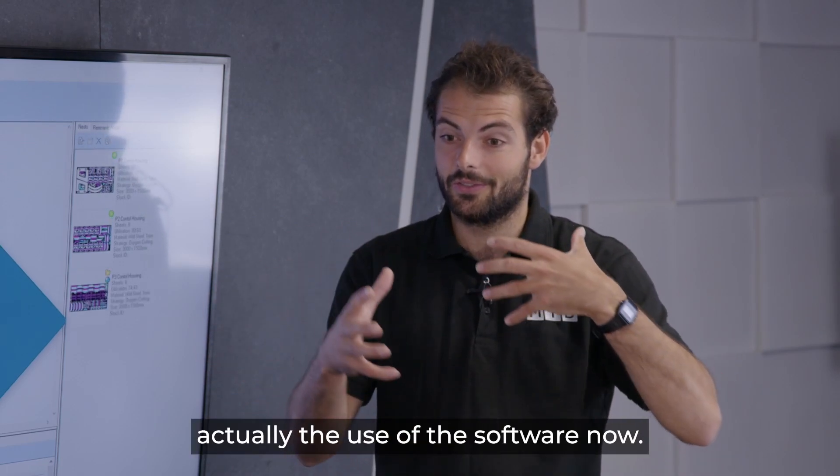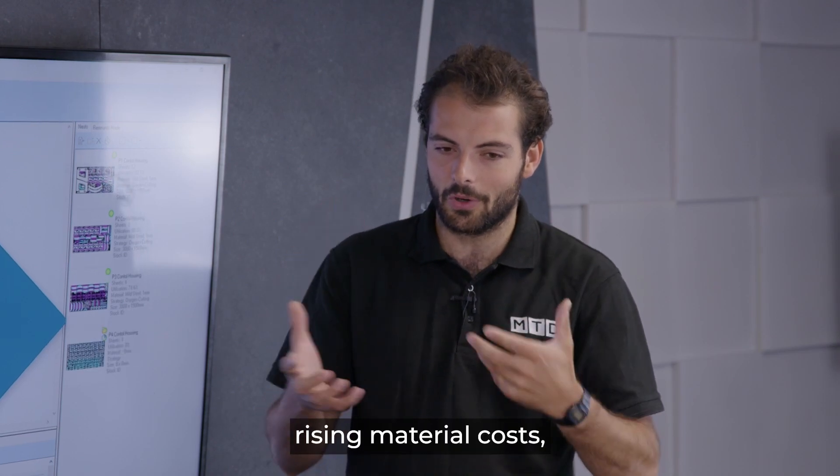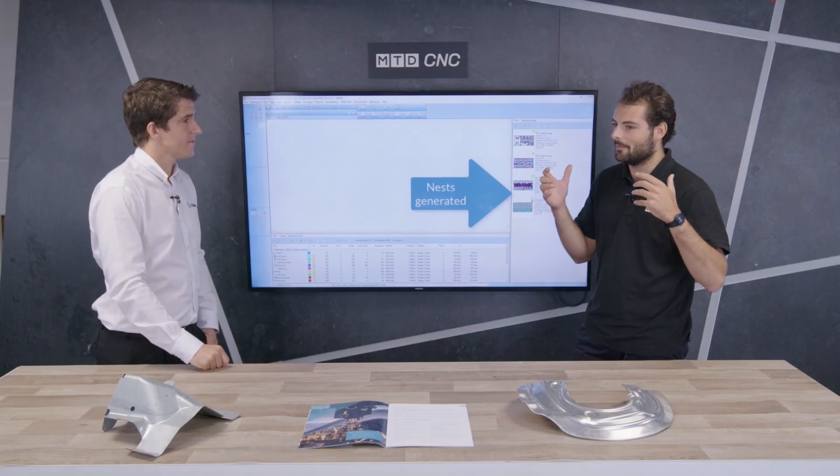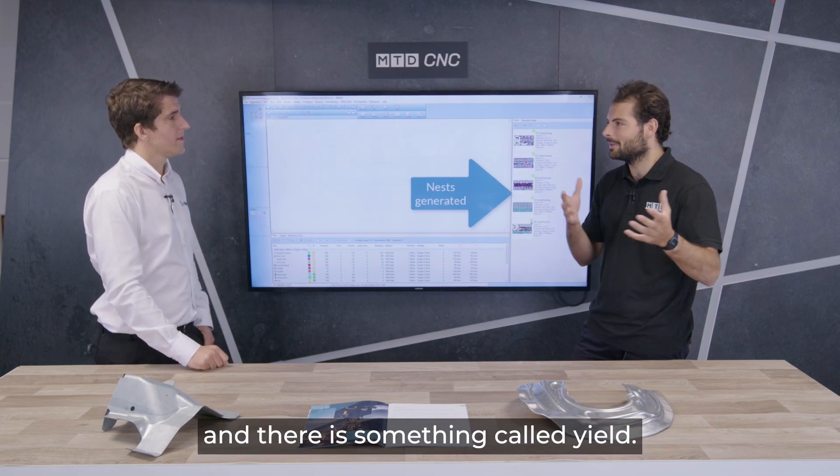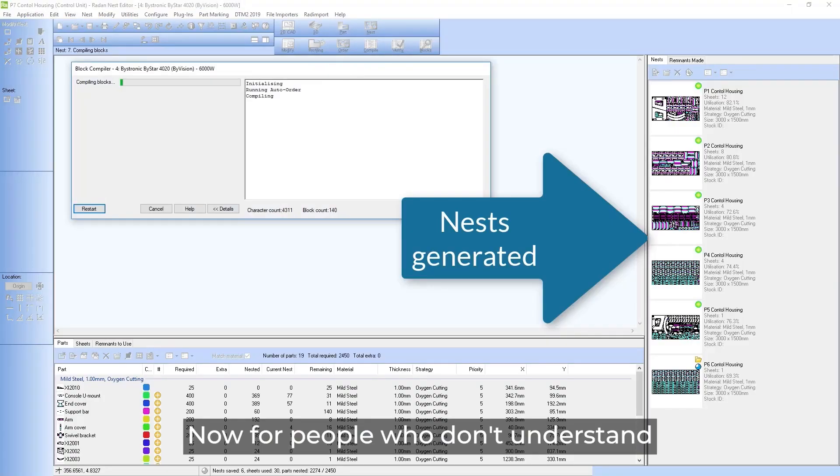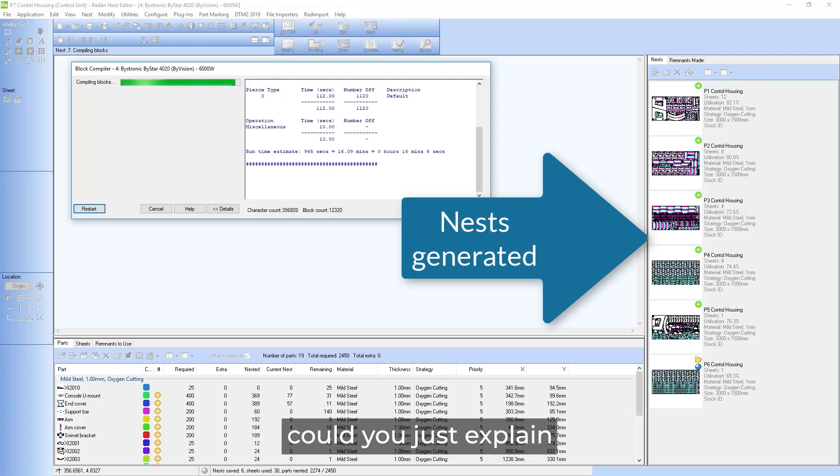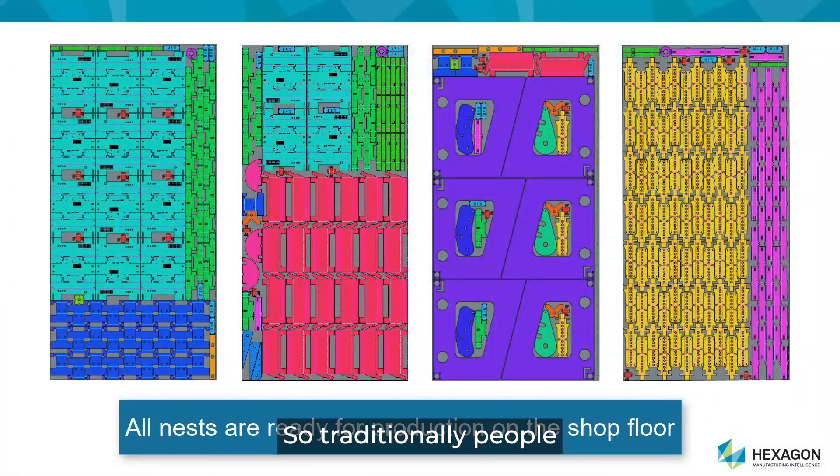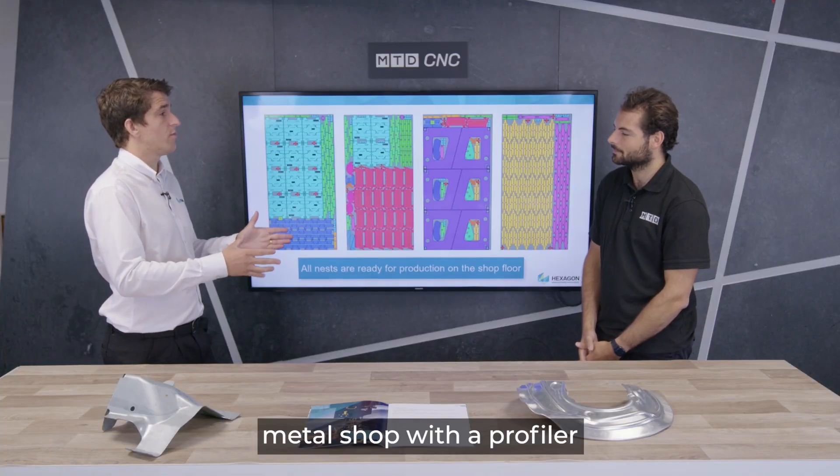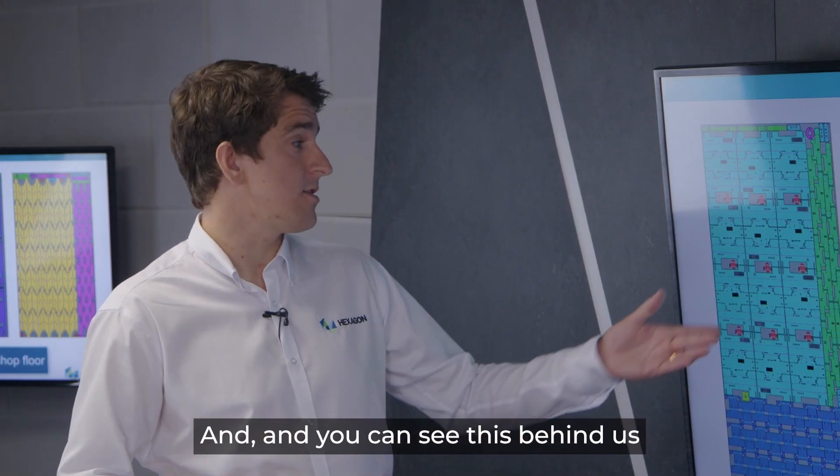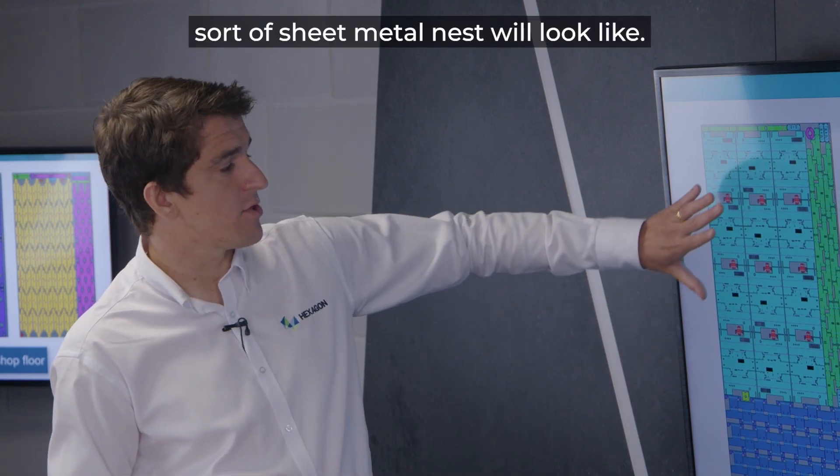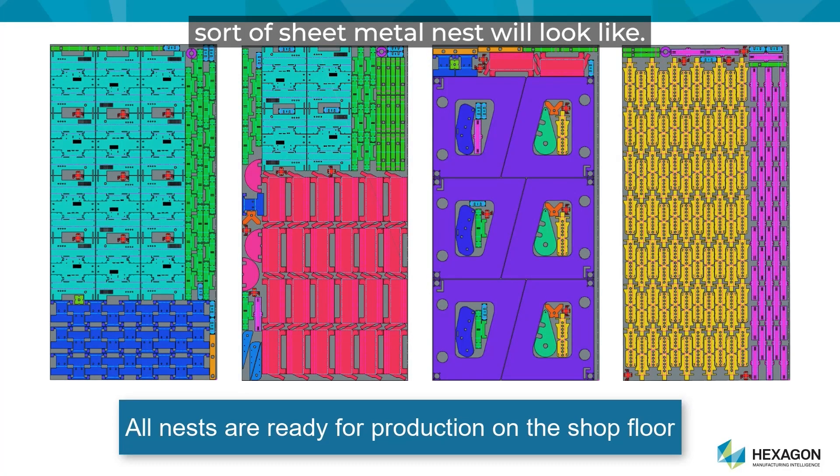Let's move on to actually the use of the software now and I think with the rising material costs, you have to nest parts into a sheet and there is something called yield. Now for people who don't understand a bit like me what yield actually is, could you just explain what that is please? Yeah, so traditionally people within a sheet metal shop with a profiler will have sheets that are two meters, two and a half meters, three meters long and you can see this behind us and this is what a general sheet metal nest will look like.